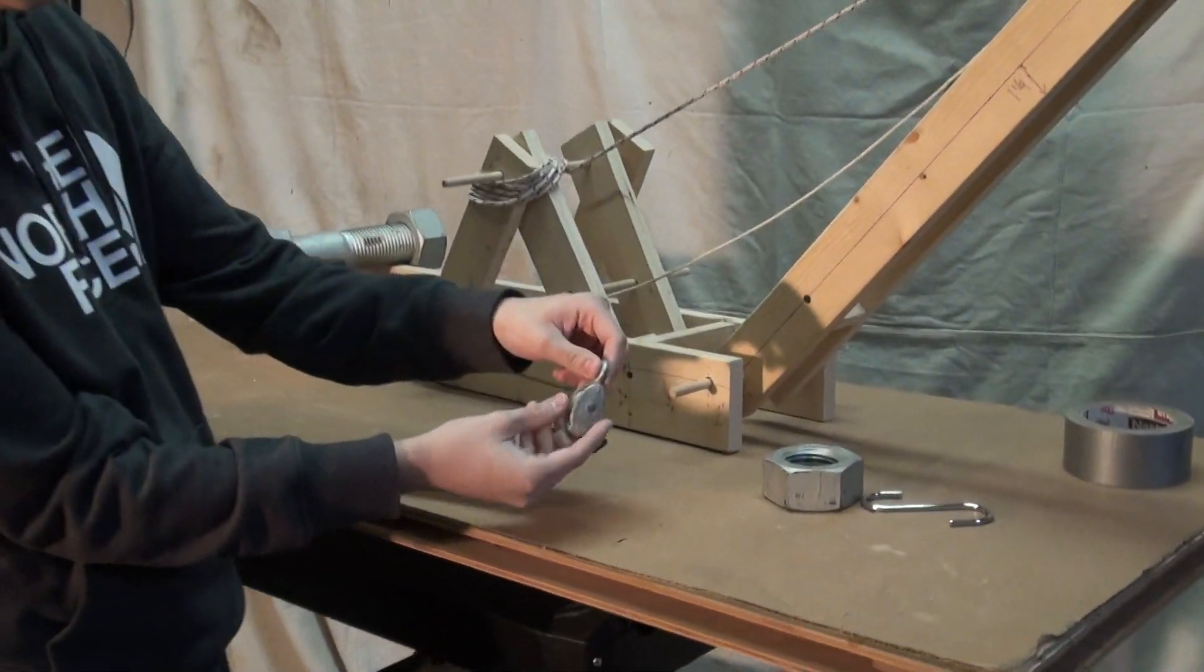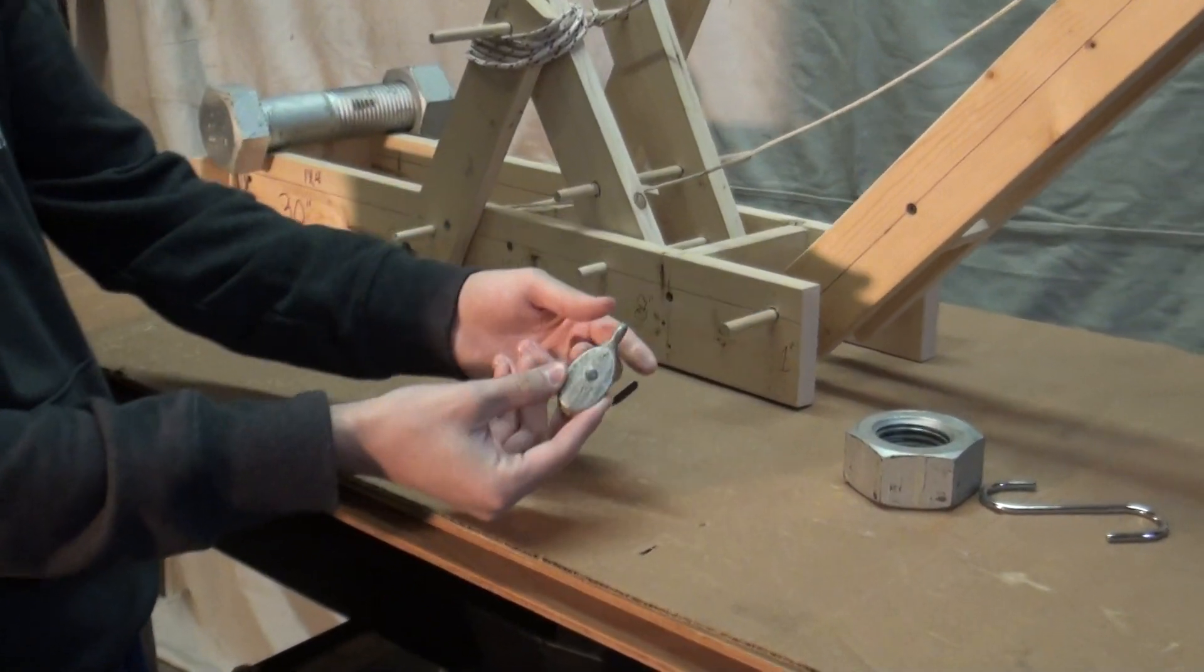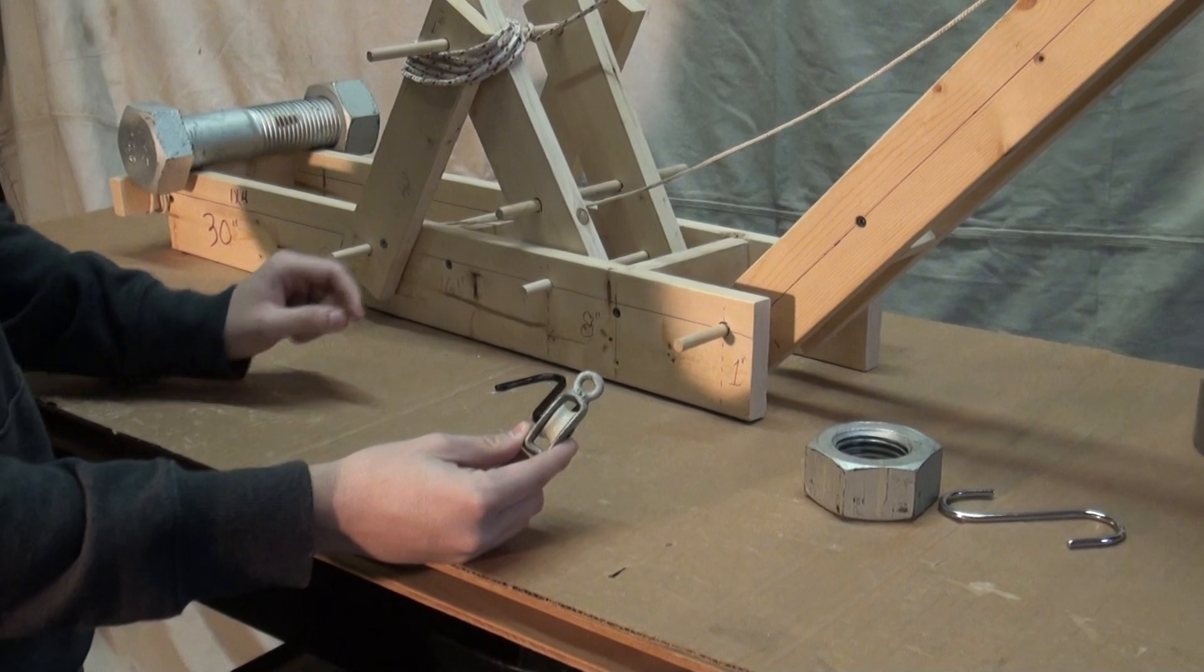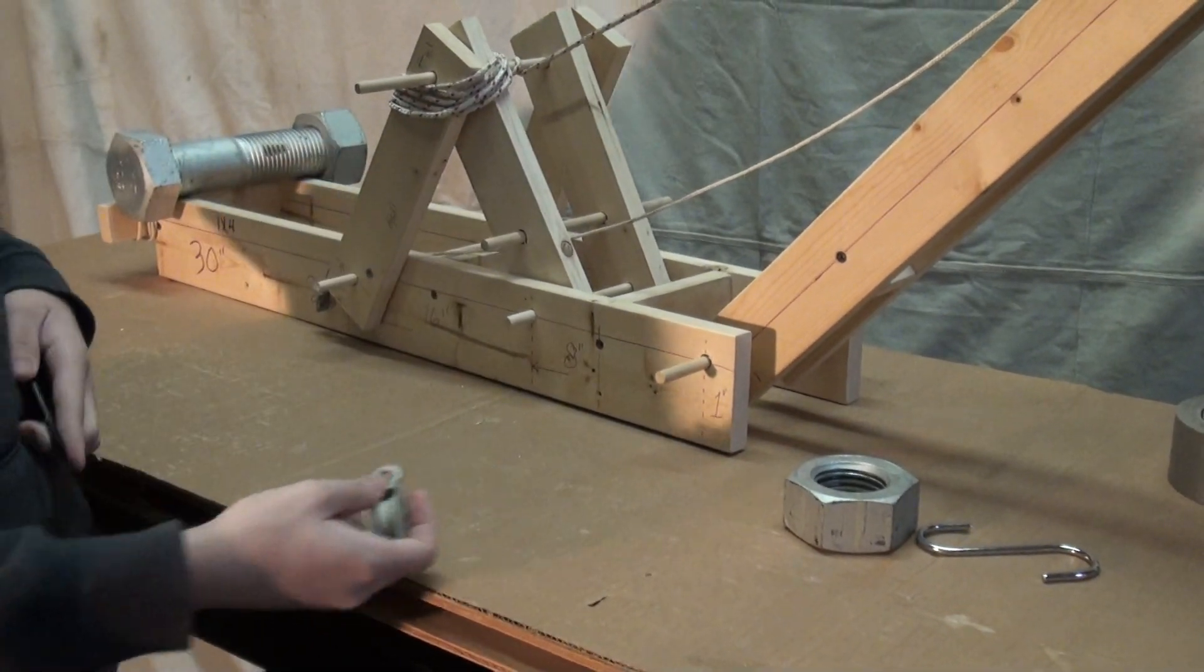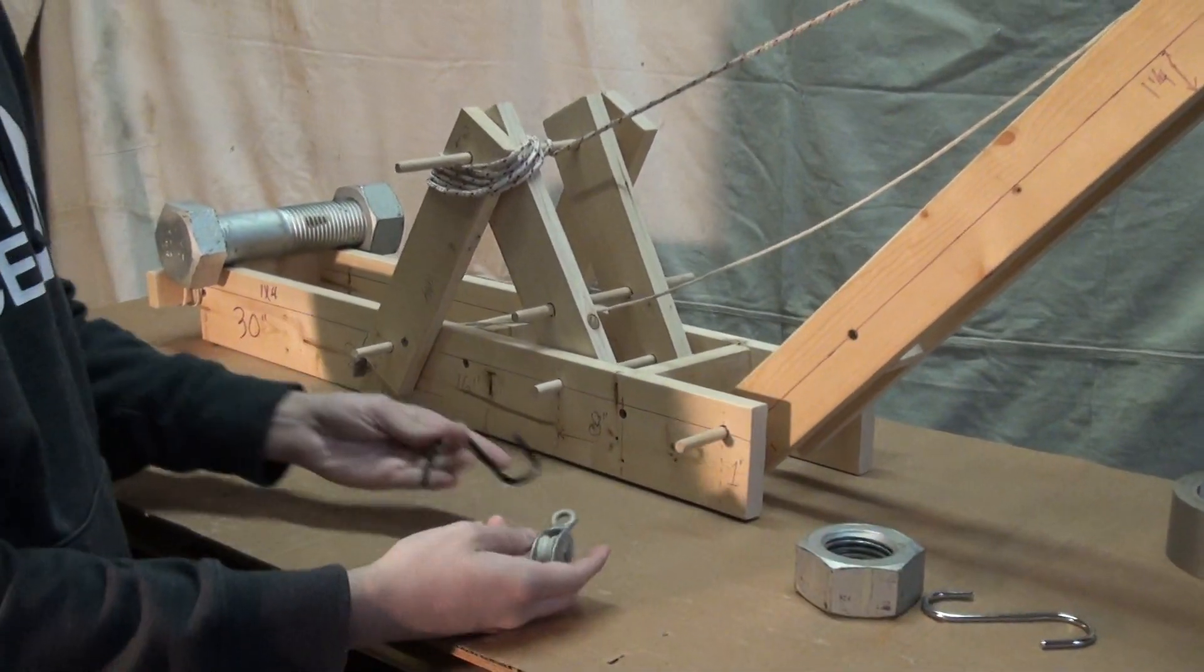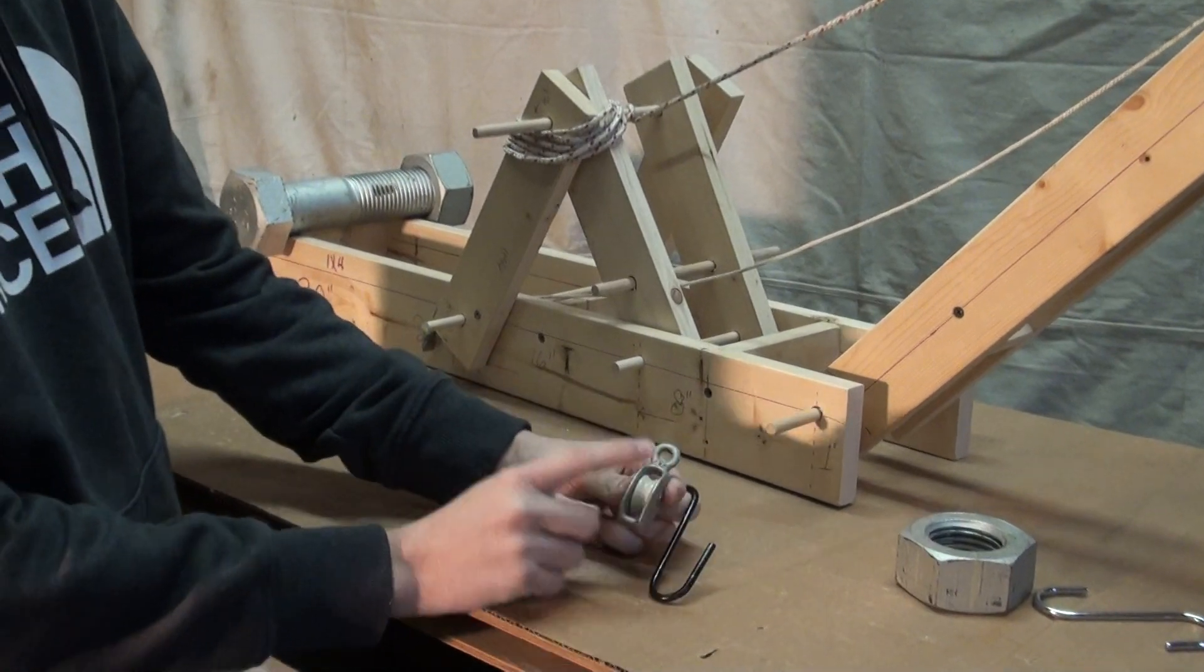We're going to take our pulley, which is, remember, the shiv and housing all together. We're going to take a hook for the load. You need a pulley that has an eye on the end of it. You see that? Yep, just like that.